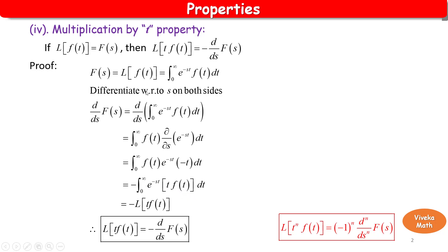Now, looking at the standard formula, L of f(t) equals the integral from 0 to infinity of e to the power minus st times f(t) dt. Comparing: the integral on the right-hand side has t·f(t) inside instead of f(t). So t·f(t) corresponds to L of t into f(t). Therefore, finally, we get L of t into f(t) is equal to minus d by ds of F(s).